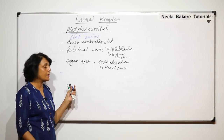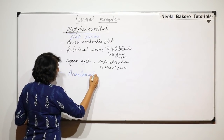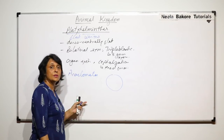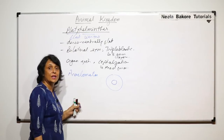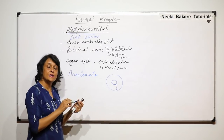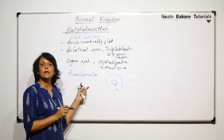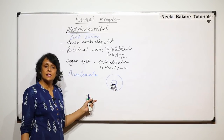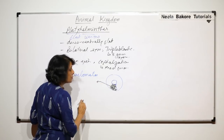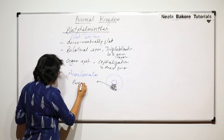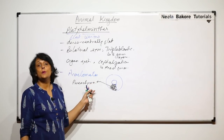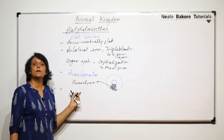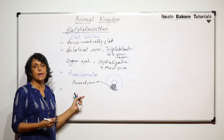There is one more feature seen in them — they are acoelomates, meaning there is no body cavity. In a cross-section of the worm, between the outermost body wall and the alimentary canal, this cavity is filled with cells. That is why we call them acoelomates. These cells are known as parenchyma cells — normally the term parenchyma is used for plant tissues, but here these cells are also termed parenchyma cells.